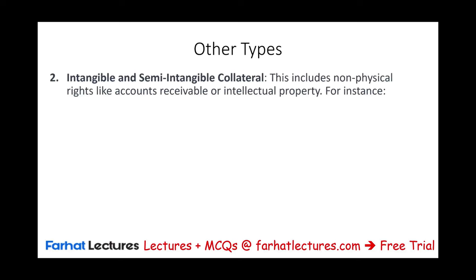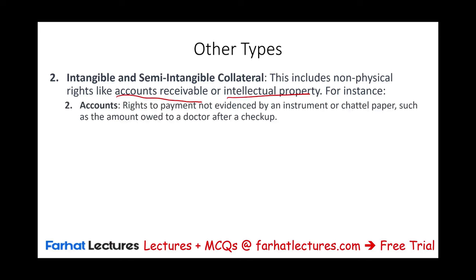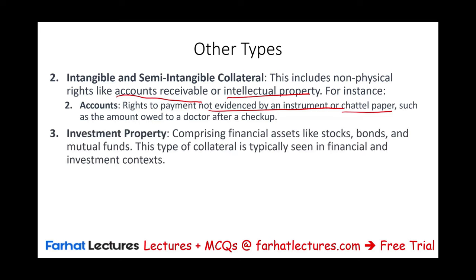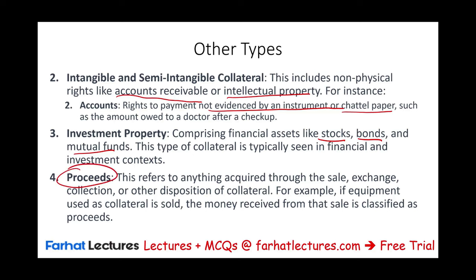Other types of collateral include intangibles and semi-intangibles — non-physical rights like accounts receivable or intellectual property, such as rights to payment not evidenced by an instrument, or chattel paper like amounts owed to a doctor after a checkup. Investment property comprises financial assets like stocks, bonds, and mutual funds, typically seen in financial and investment contexts. Finally, proceeds refer to anything acquired through the sale, exchange, collection, or other disposition of collateral — for example, money received from selling equipment used as collateral is classified as proceeds.